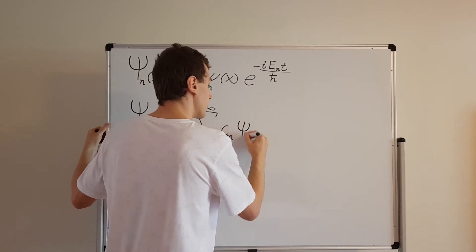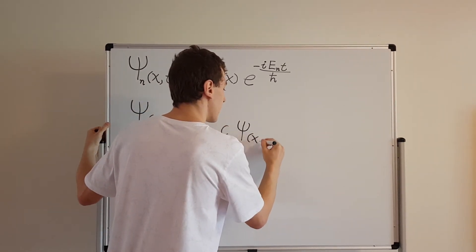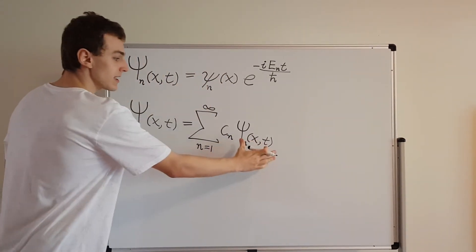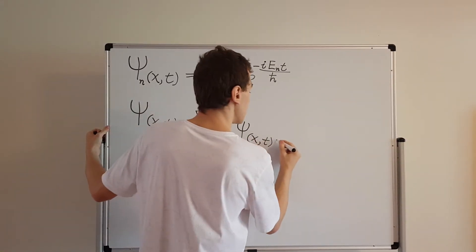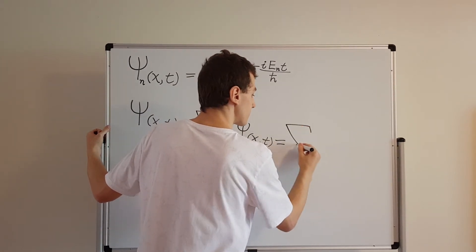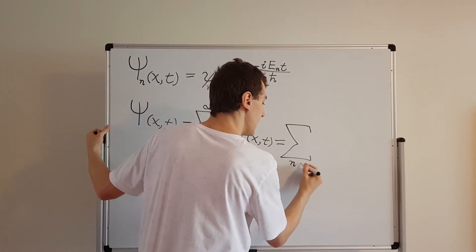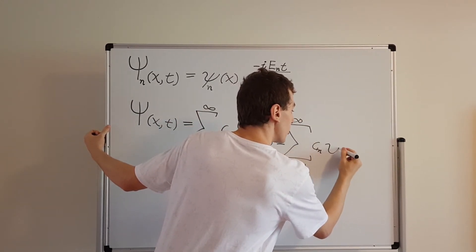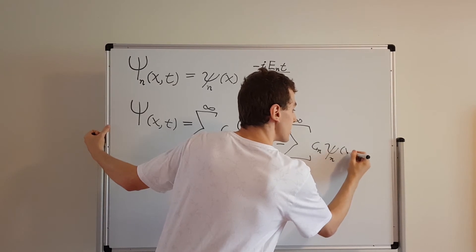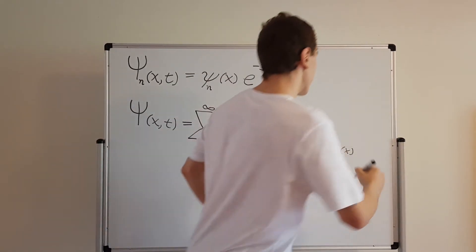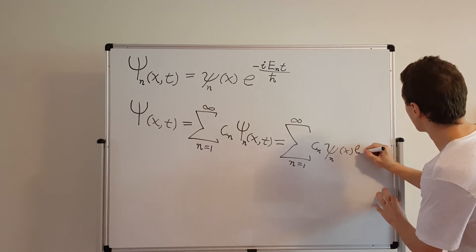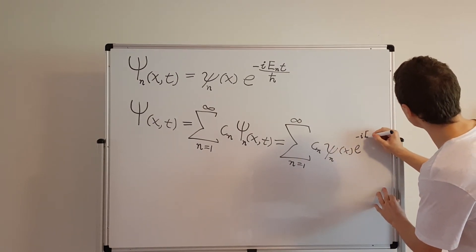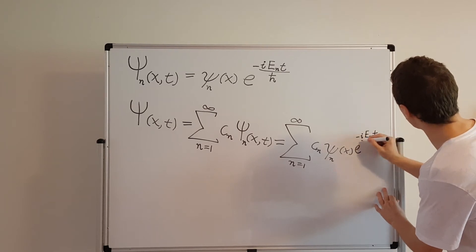We can repackage this and rewrite the sum as the sum from n = 1 to infinity of c_n times ψ_n(x) — which depends on x — times this exponential factor, which is e^(−i E_n t / ℏ). So you can see how this is equivalent — this is just a repackaged version of all of the separable solutions we found.